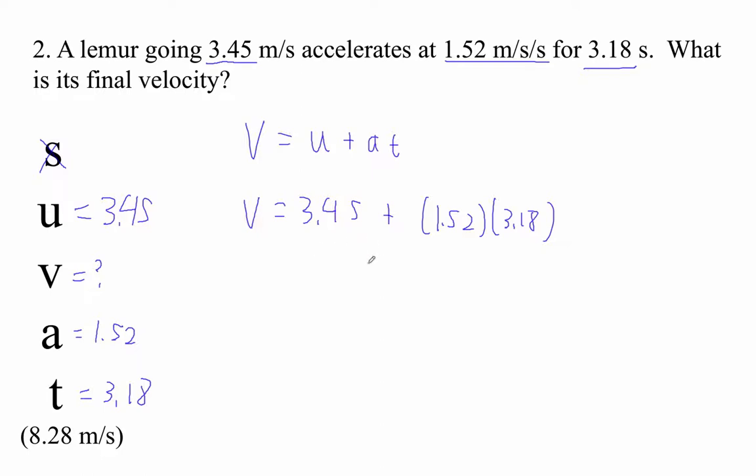So 3.45 plus 1.52 times 3.18. I'm getting 8.2836 meters per second is our final velocity of our lemur.